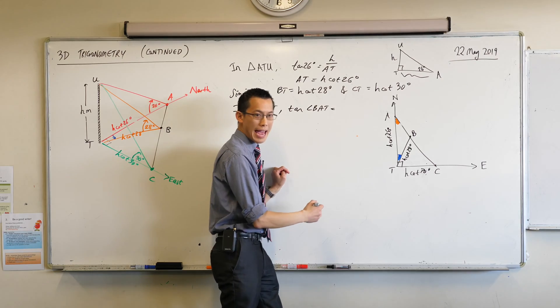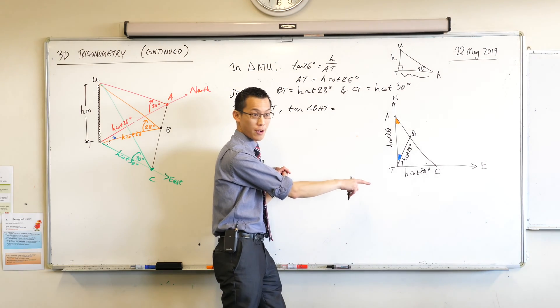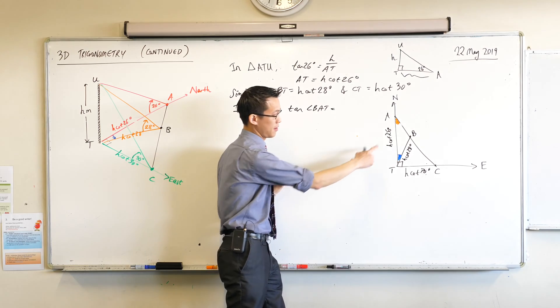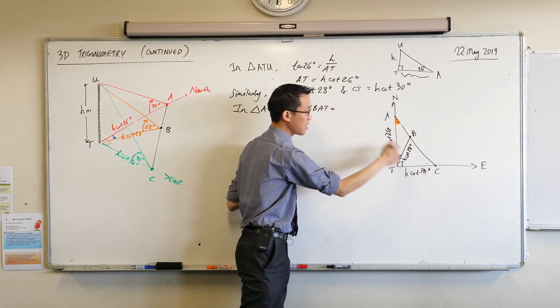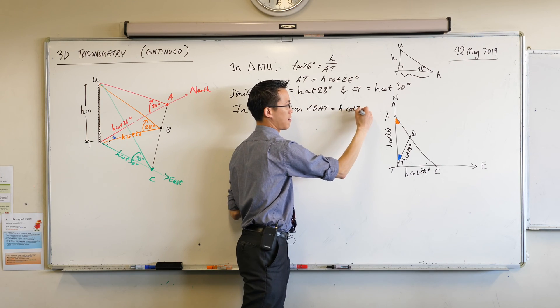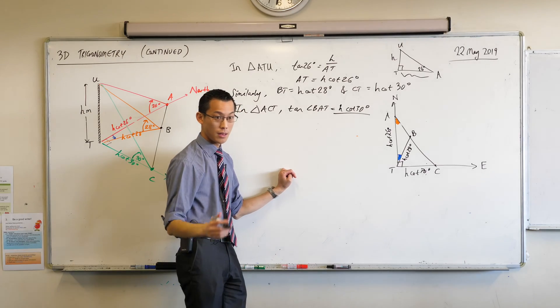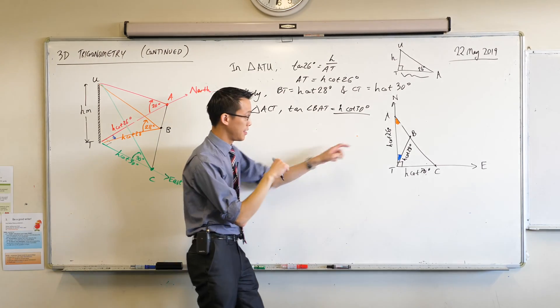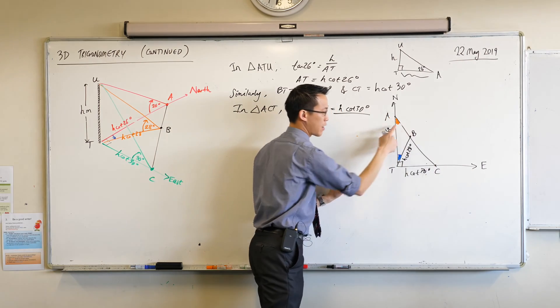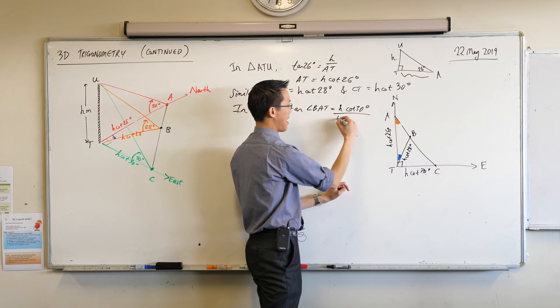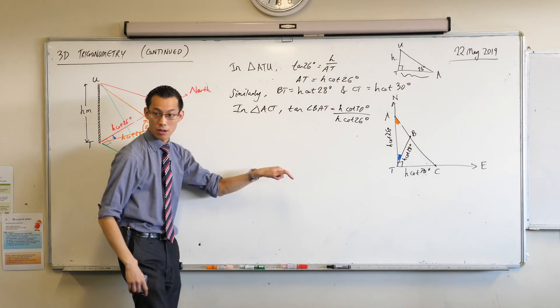So opposite will be H cot. Look carefully. Which side am I looking at? H cot. This is opposite. Here's my orange angle. It's H cot 30. There's the opposite. What's the adjacent side? H cot 30. Look carefully. This is the orange angle. What's next to this orange angle in this big right angle triangle? It's this guy, H cot 26 degrees. Opposite on adjacent.